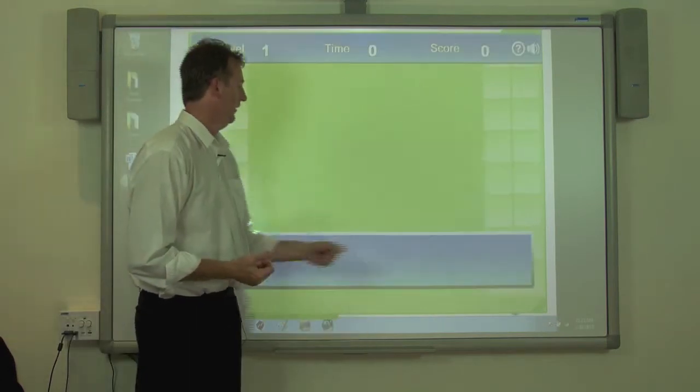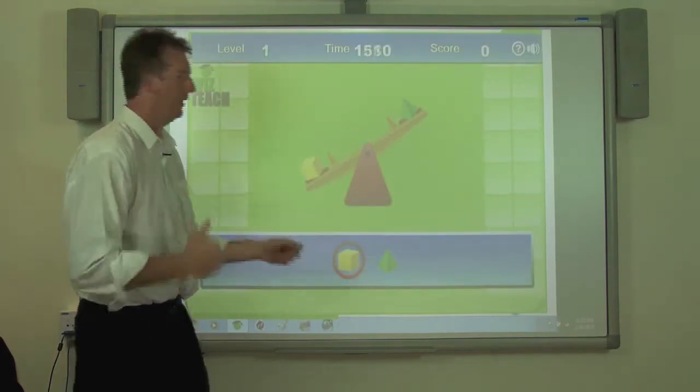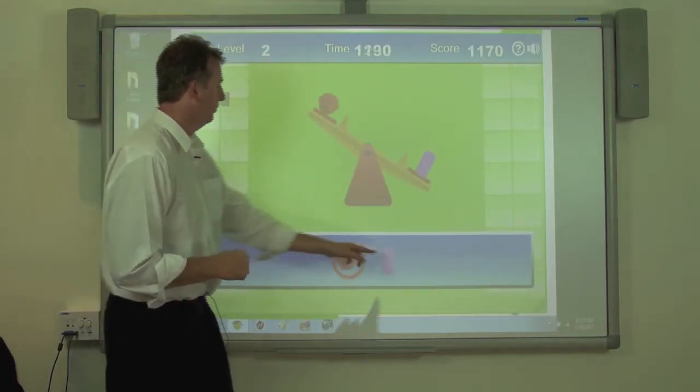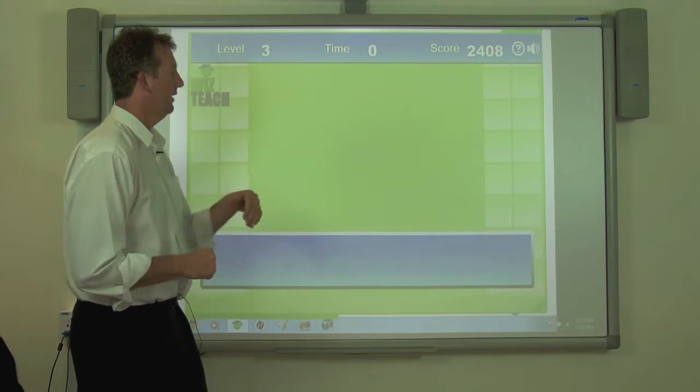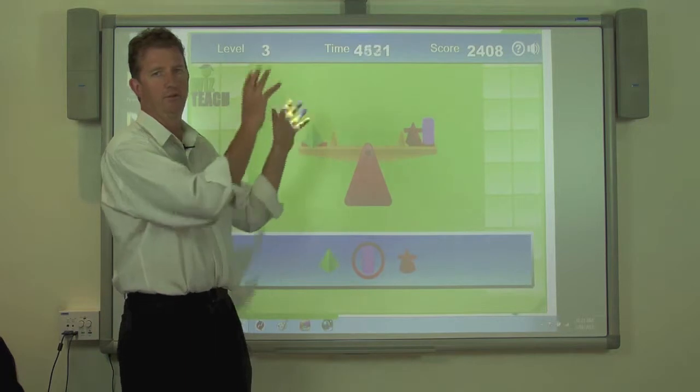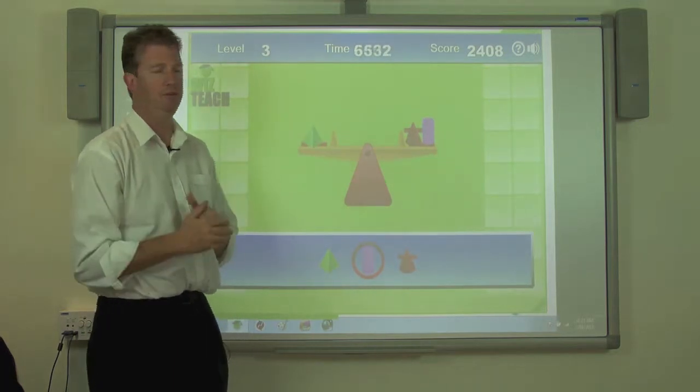So with this one we just have to select the heaviest object. And as I said, they are fairly easy to start with, and then they'll get progressively hard. So as we get further into this, there'll be like five different seesaws with all different shapes and so forth, and you have to pick the heaviest one.